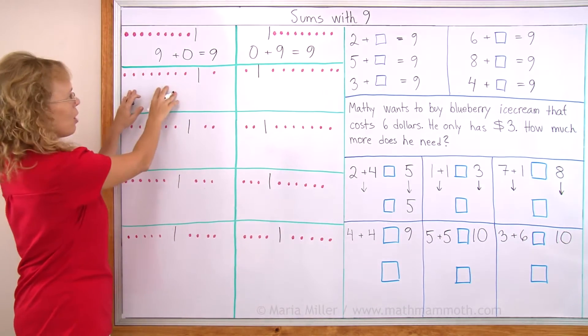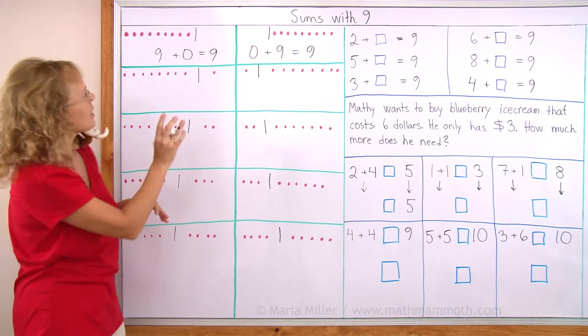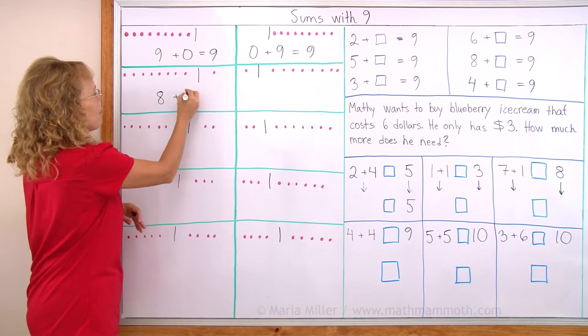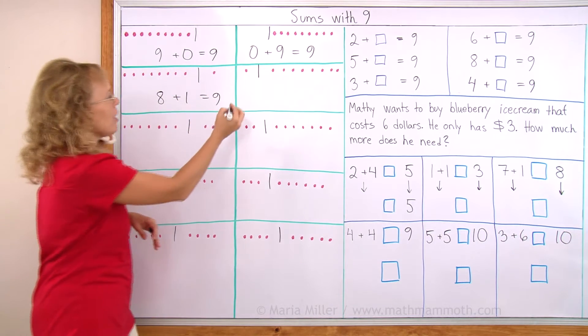And over here now I have how many and 1? Just 1 less than 9 here, right? So this is 8 and 1 and that makes 9. And over here 1 and 8.